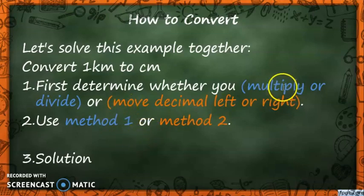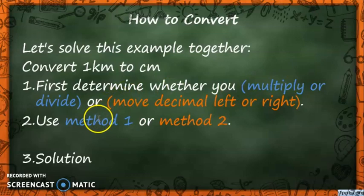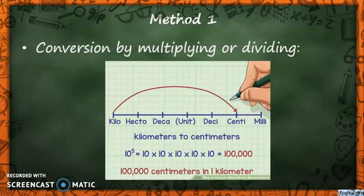Multiplying or dividing is method 1. Moving the decimal left or right is method 2. Let's look at method 1 — conversion by multiplying or dividing.